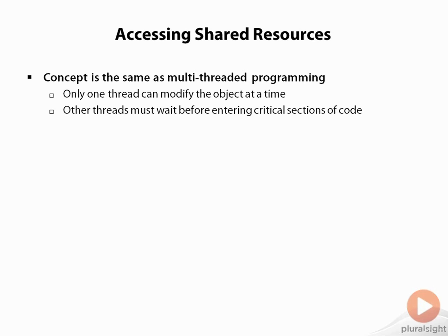In this way, the object is prevented from becoming corrupted, because only one thread can be in the critical section of code modifying the object at any time. In addition, while a thread is accessing a critical code section, no other thread can read data from the object. This makes sure that no other threads read the object while it is being modified and potentially receive incomplete or inconsistent data.